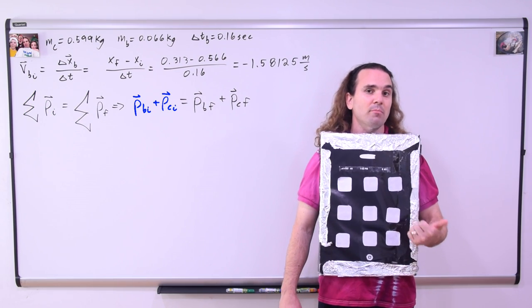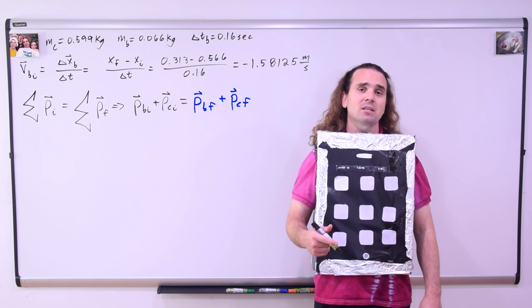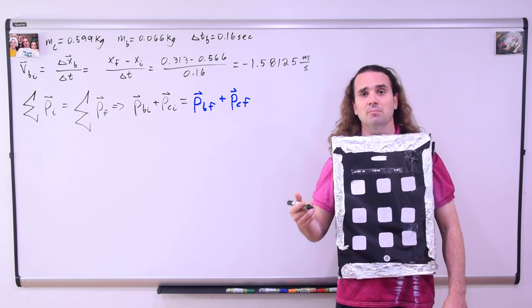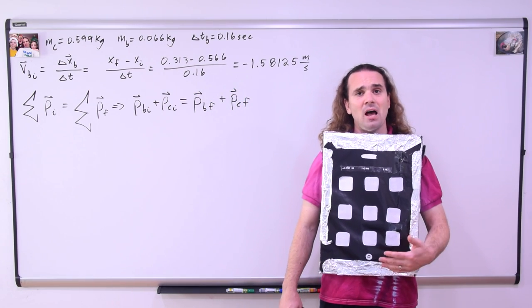the initial momentum of the ball plus the initial momentum of the cart is equal to the final momentum of the ball plus the final momentum of the cart. And momentum equals mass times velocity.